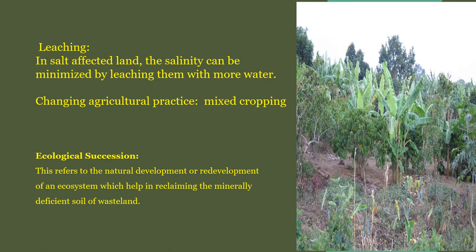Changing agricultural practices is another method. Farmers can adopt mixed cropping, where banana and other trees are grown together, because each plant has different capacities and requirements from the land, and such mixed cropping can convert wasteland into cultivable land. The last option is ecological succession, which refers to the natural development or redevelopment of an ecosystem that helps reclaim the minerally deficient soil of wastelands.